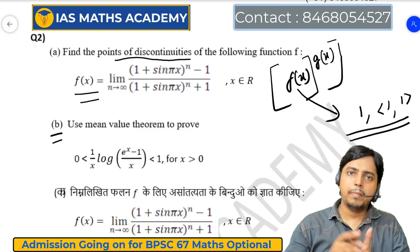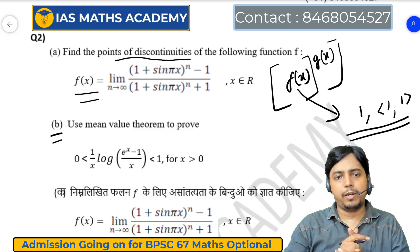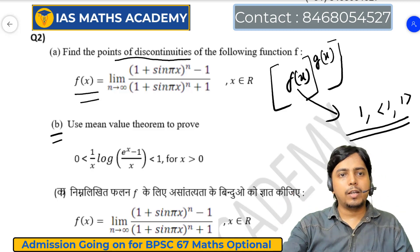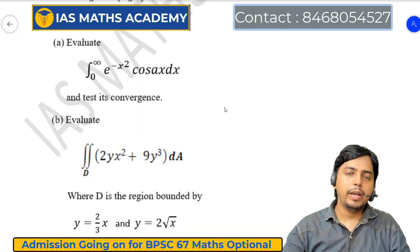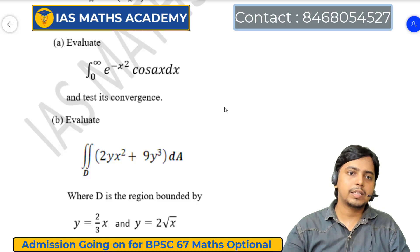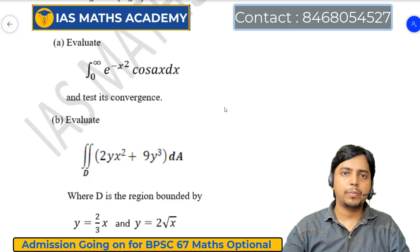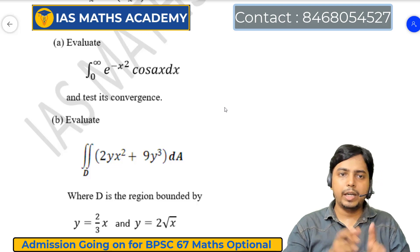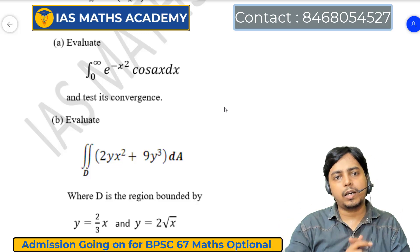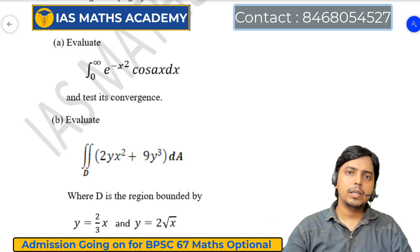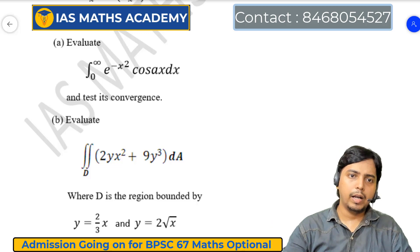तो 50 plus 50, हम 100 marks के questions आप लोग अभी तक आराम से attempt कर पाए हैं। Question number 3A में कहा रहा है: evaluate the integral from 0 to infinity of e^(-x²) cos(ax+b) dx and test its convergence। Convergence test के लिए real analysis वाला test use कर सकते हो। Value निकालने के लिए beta या gamma function का उपयोग करके integral separate करके formula लगाकर solve कर सकते हैं। यह medium level का question है, पहले practice किया हो तो exam में आराम से solve हो जाता है।